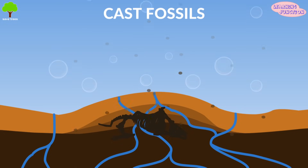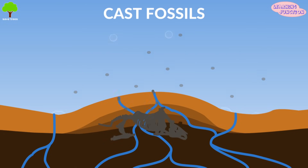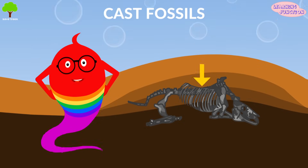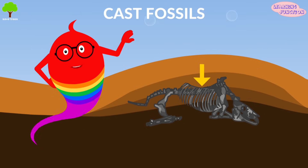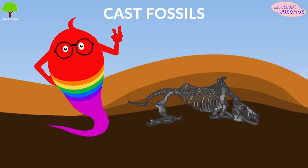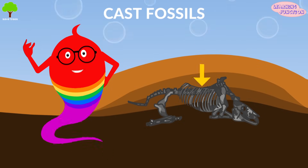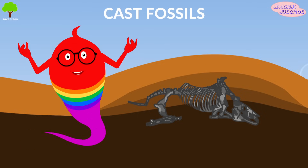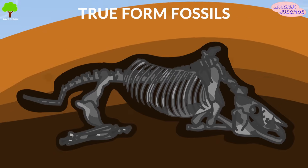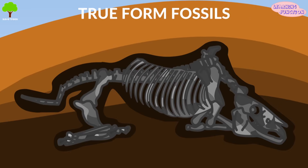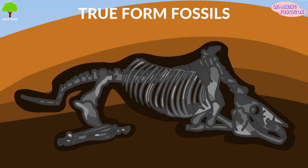Cast fossils are formed when a mold fossil is filled in by surrounding minerals and sediment. It is a replica of the original organism and provides an impression of the original structure.